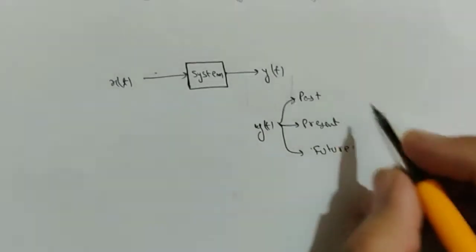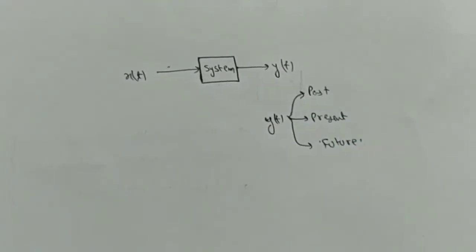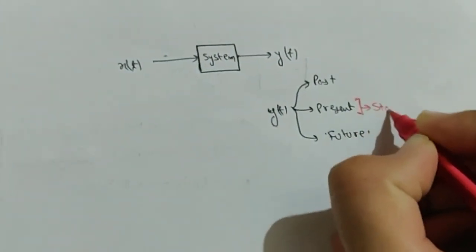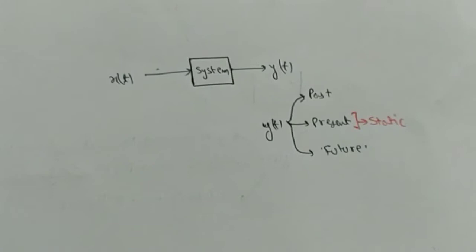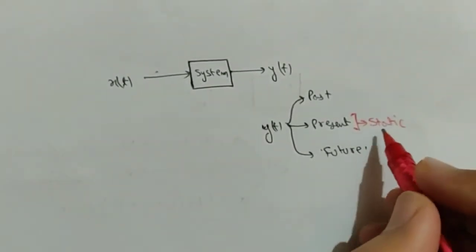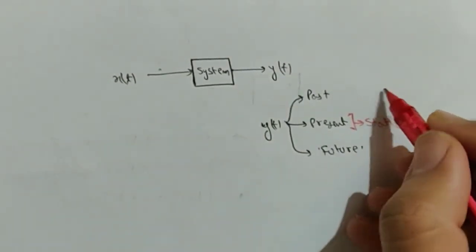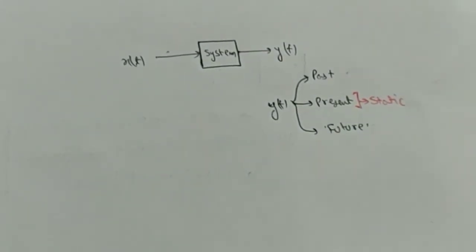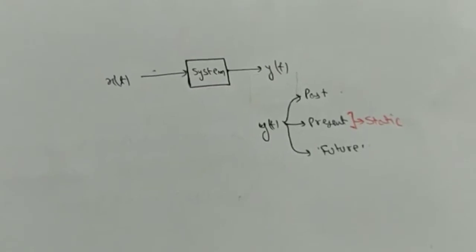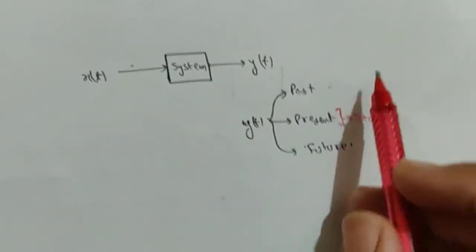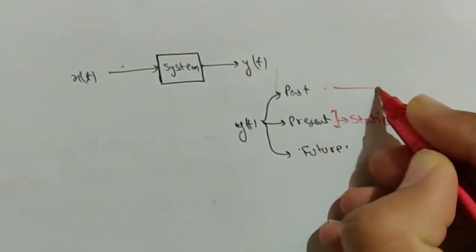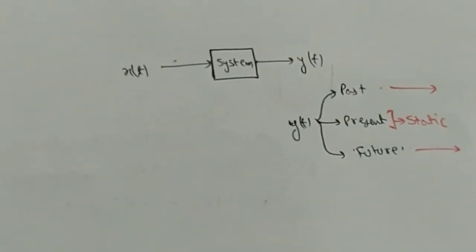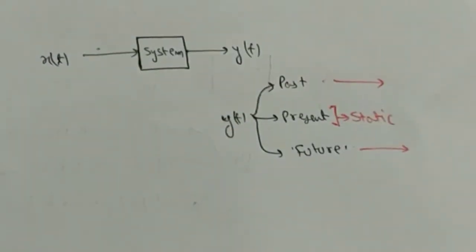If y(t) depends only on the present value of the input, the system is called static. If it depends either on past or future values of the input at any instant of time, it is called a dynamic system.